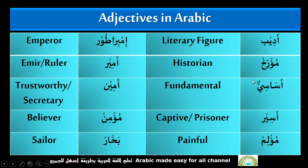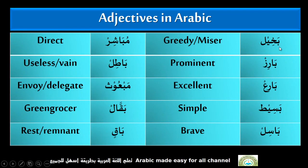Muarrikhun — Historian. Assassinun — Fundamental. Asir — Captive, Prisoner. Mu'limun — Painful. Imperator — Emperor. Amir, Emir — Ruler. Amir — Trustworthy, Secretary. Mu'min — Believer. Bahar — Sailor. Bakheel — Greedy, Miser.